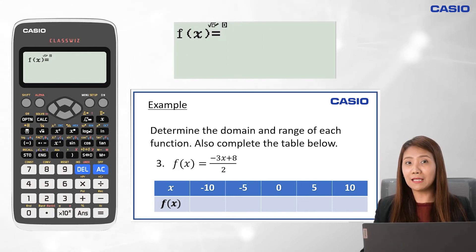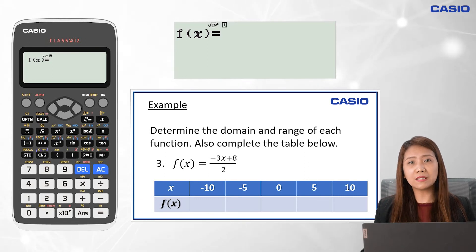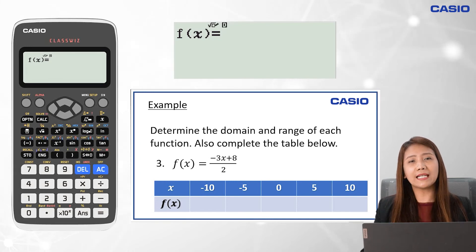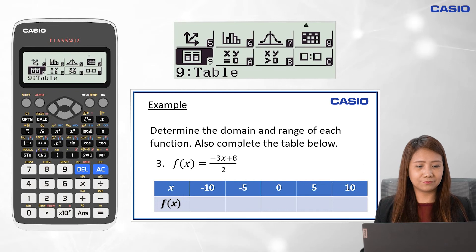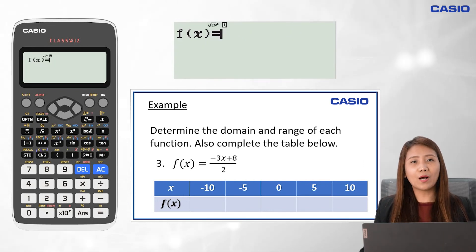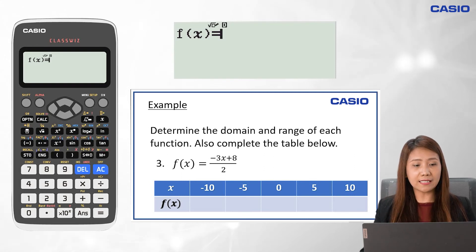Also, let's complete the table. This time, the function is f of x equals the quantity negative 3x plus 8 over 2. Let's have another example and complete the table using Casio ClassWiz before identifying the domain and range. First, we press Menu and 9. We input the function, quantity negative 3x plus 8 over 2, then press equal sign twice.